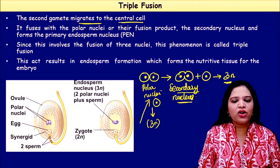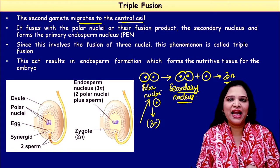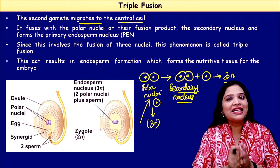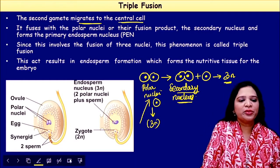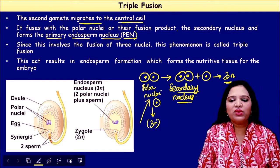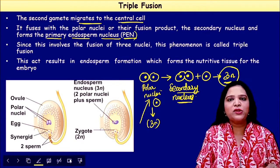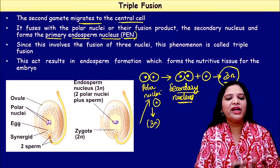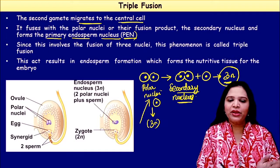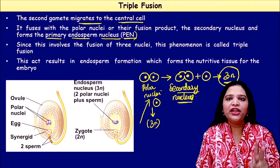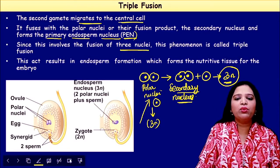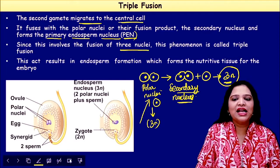Why is it called triple fusion? Because two polar nuclei plus one male gamete — three nuclei are involved and fusing together. There is another terminology: primary endosperm nucleus, abbreviated as PEN. This 3n structure is the PEN, formed by the fusion of the two polar nuclei and a male gamete, or fusion of the secondary nucleus and the male gamete. Since three nuclei are involved, this phenomenon is called triple fusion.